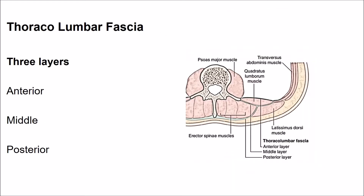The thoracolumbar fascia, also known as the lumbar fascia, is located in the lumbar region. It consists of three layers: the anterior layer, middle layer, and posterior layer. The quadratus lumborum muscle is enclosed between the anterior and middle layer. The erector spinae muscle is enclosed between the middle and posterior layers.